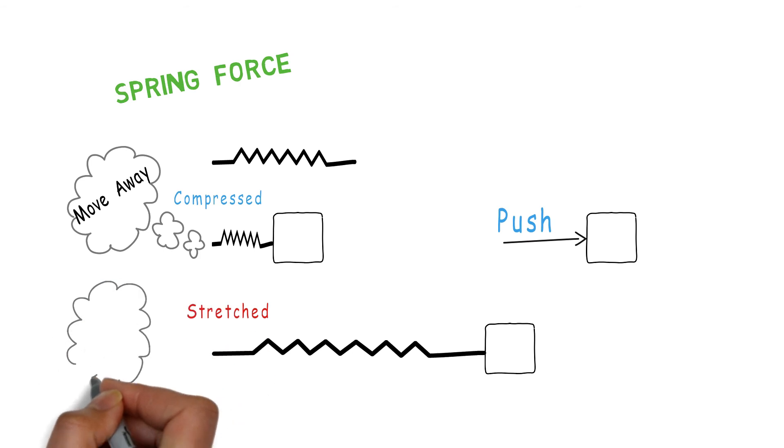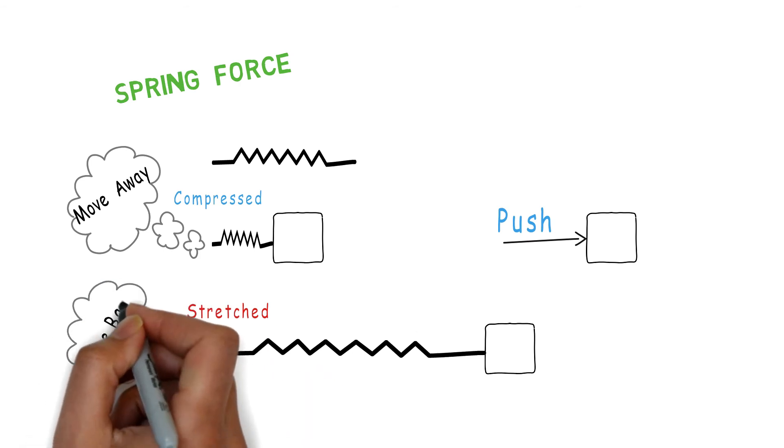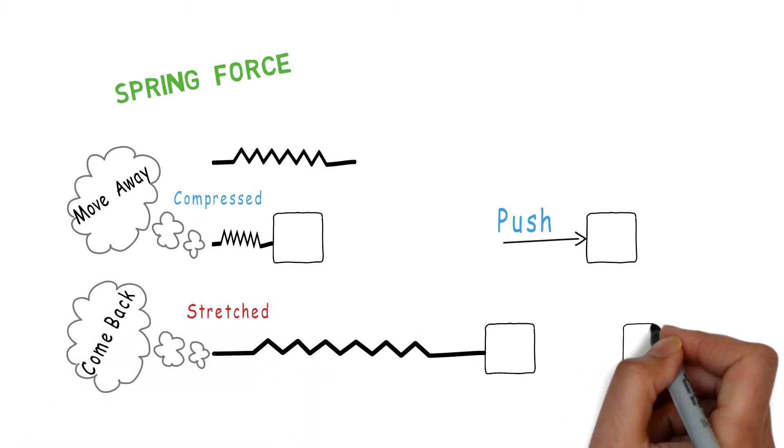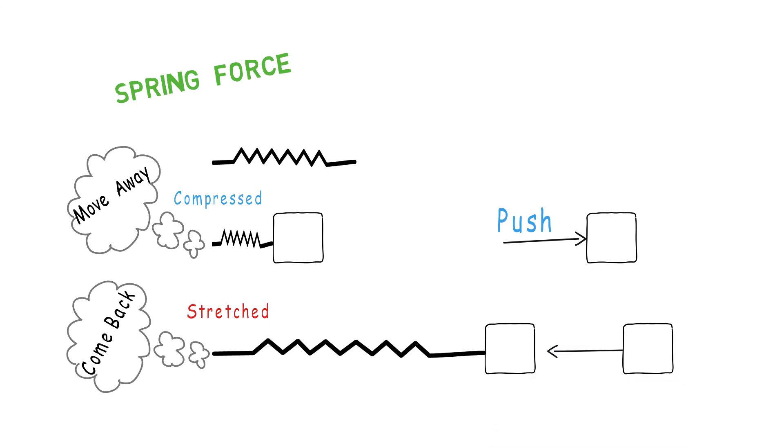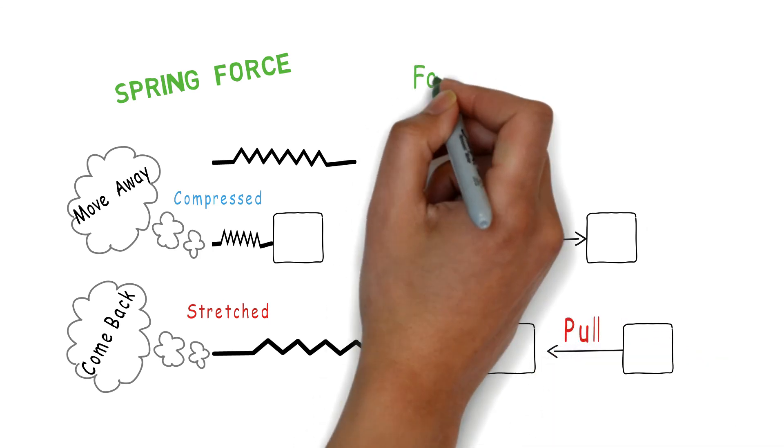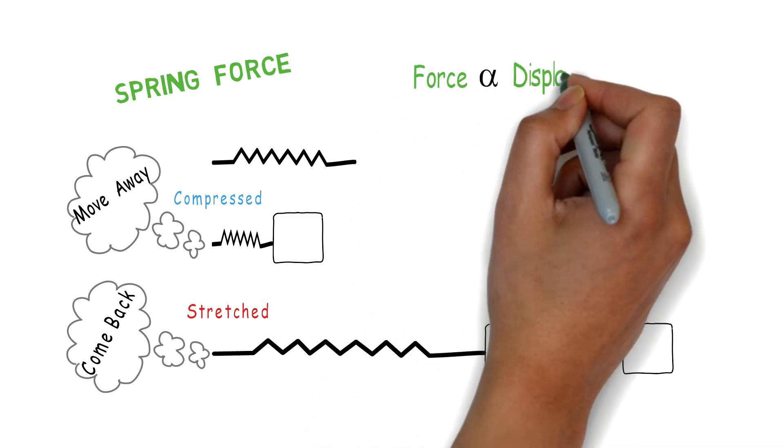But when the spring is stretched from its main position, the spring will pull the body back towards itself. Both these forces will be along the axis of the spring and directly proportional to the distance from its original position.